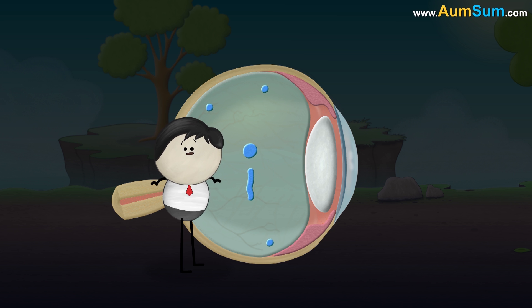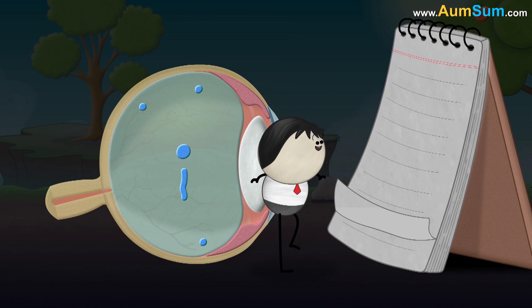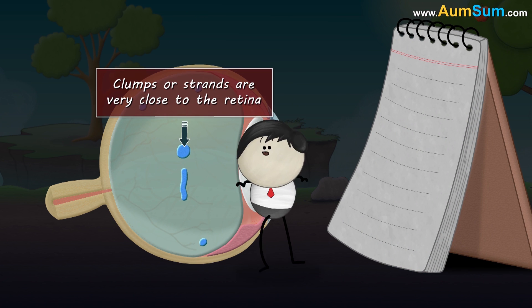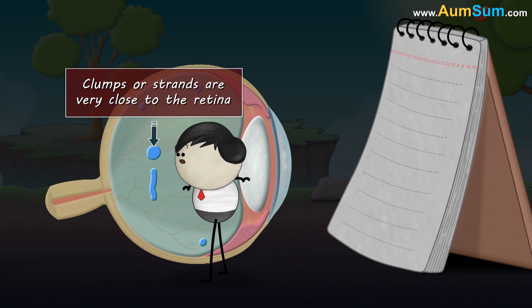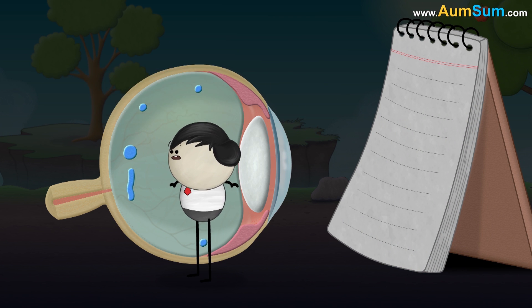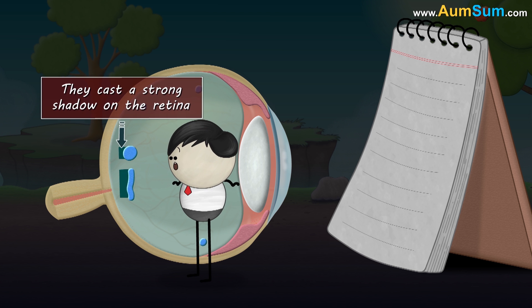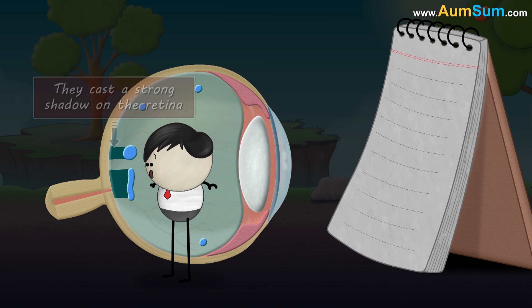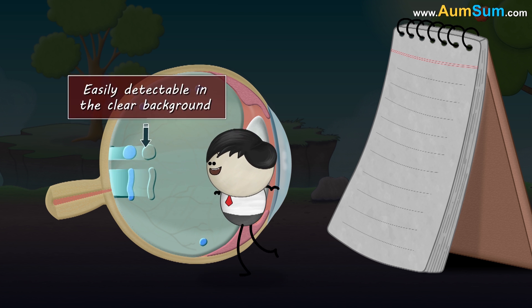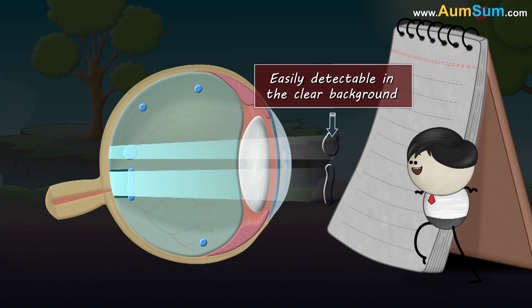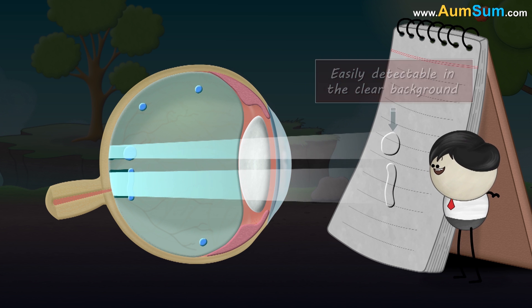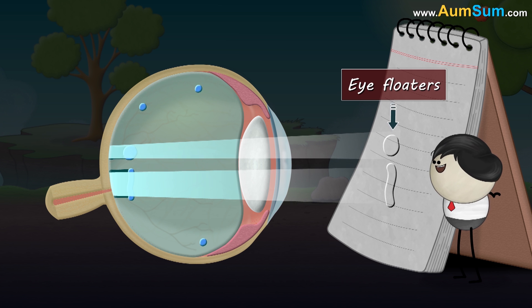When we look at a clear sky or a blank page and the clumps or strands are very close to the retina, they cast a strong shadow on the retina, making them easily detectable in the clear background and thus forming eye floaters.